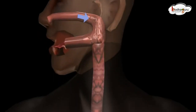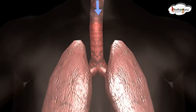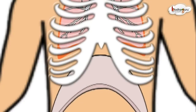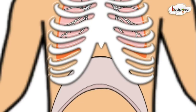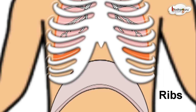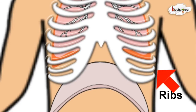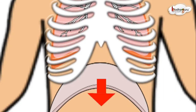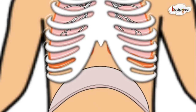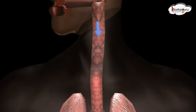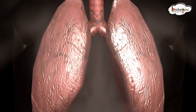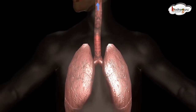To reiterate, the taking in of air rich in oxygen into the body is called inhalation. During inhalation, the ribs move up and outwards. The diaphragm moves down. The chest cavity becomes larger and the air rushes into the lungs, inflating the lungs.